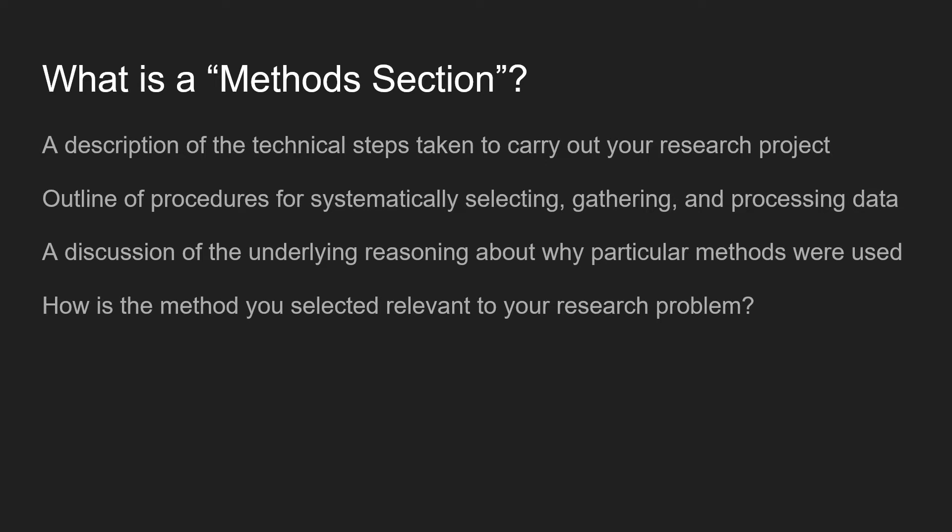A research methods section outlines the different procedures for systematically selecting, gathering, and processing the data for your project. You should discuss the reasoning about why particular methods were used. After reading the method section, somebody should understand why you selected a particular method, how it's relevant to your research problem, and how it will help shed light on your research questions.